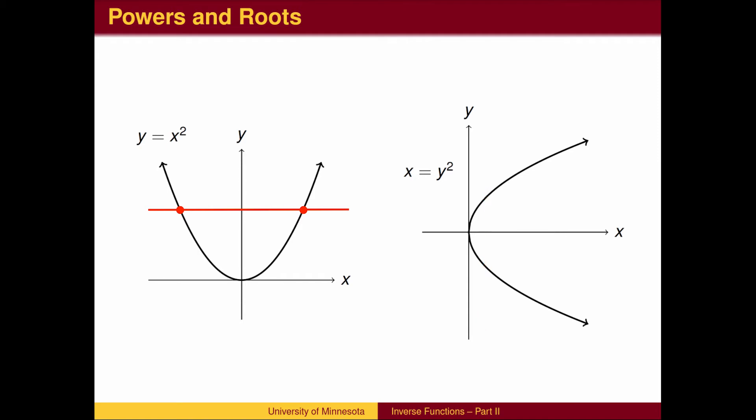If we interchange x and y, we get a graph that is not a function. When defining the function y equals the square root of x to be the inverse of squaring, we need to make a decision as to which branch of the graph to use. For the square root function, we choose the positive answer.